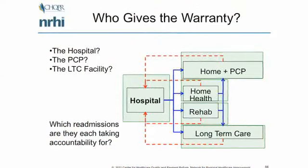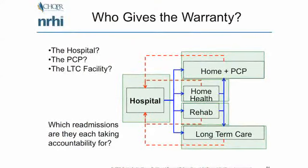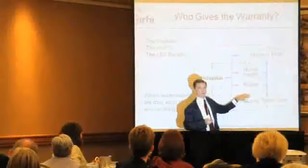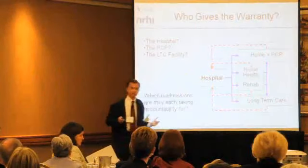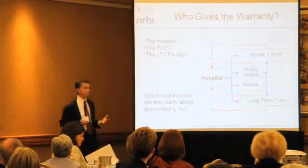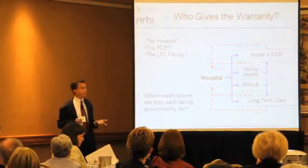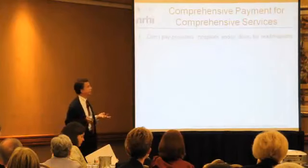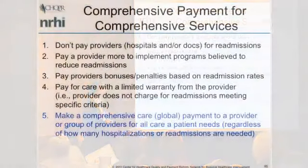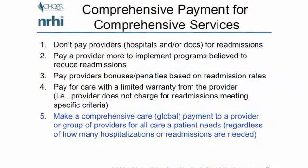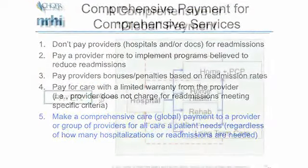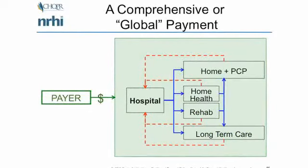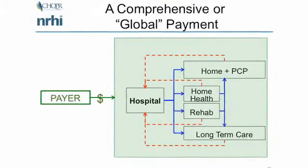One barrier is who actually gives the warranty. Does the hospital give a warranty, then home health, the PCP, and the rehab facility — all trying to take credit? That's challenging with so many different entities involved. That's where the notion of a comprehensive payment comes into place: one payment to somebody to manage all of this and then let them redesign care within that budget without worrying about what they're going to lose.